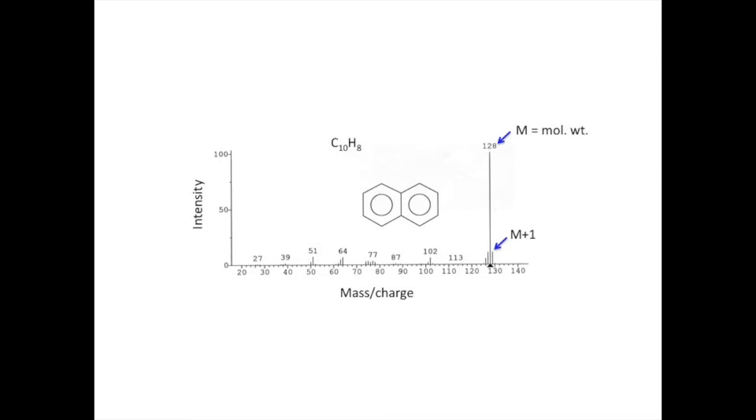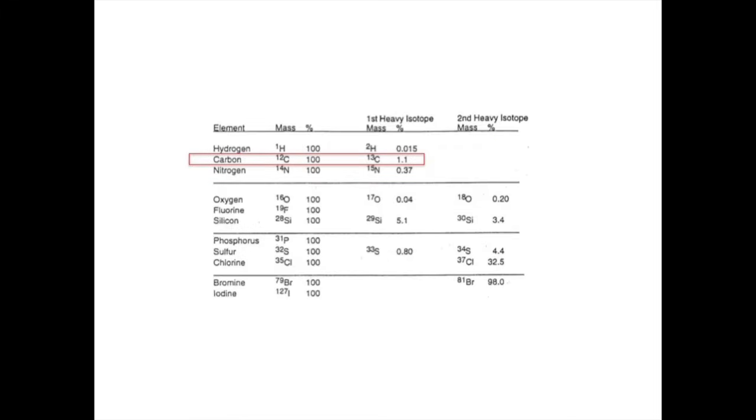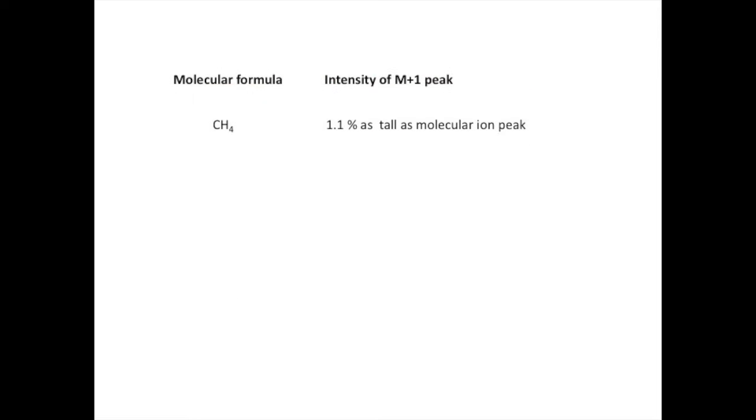This satellite peak is associated with versions of the parent molecule that contain one heavy isotope of carbon. Here is a table of the most common elements found in organic molecules. Each of these elements, the lightest isotope, is the most abundant of the common isotopes for that particular element. The table is telling us that for every 100 atoms of carbon that have a mass of 12, there are approximately 1.1 atoms of carbon-13.